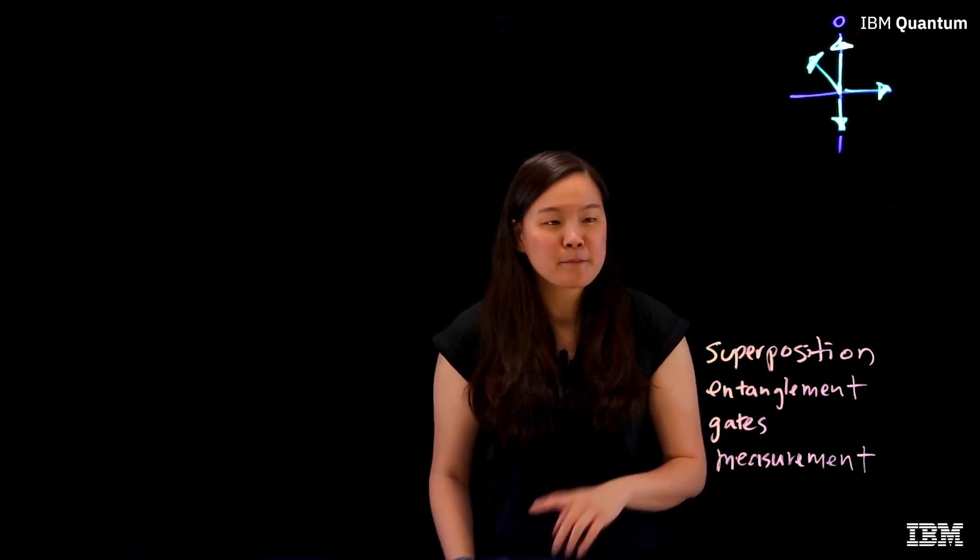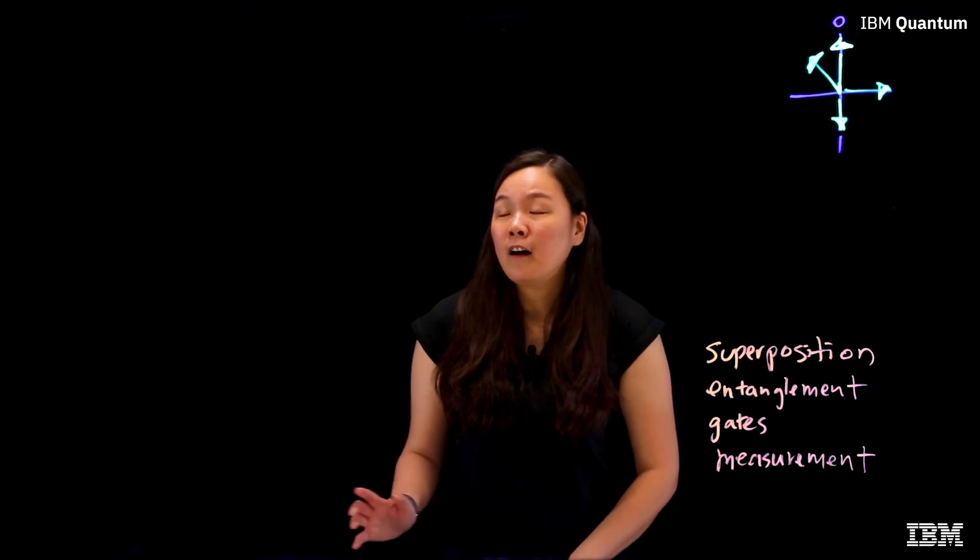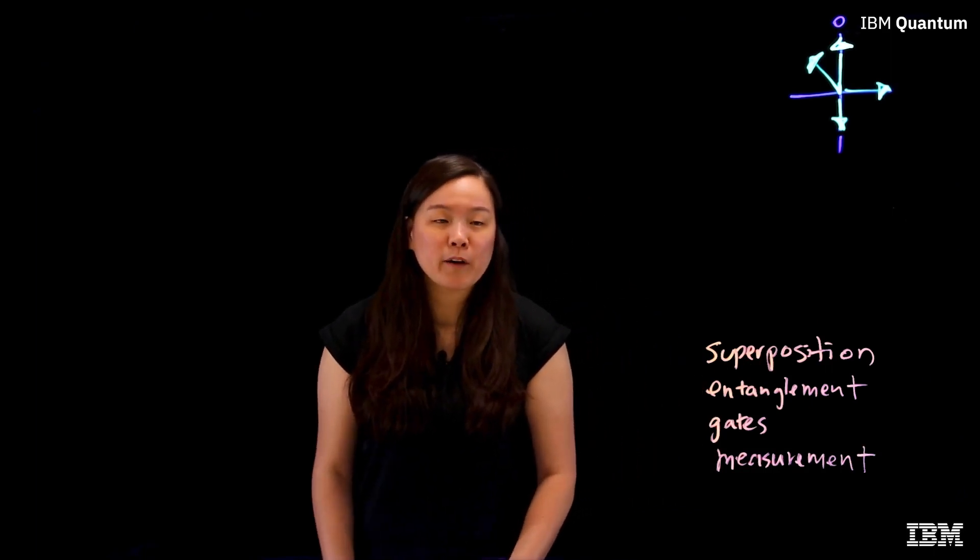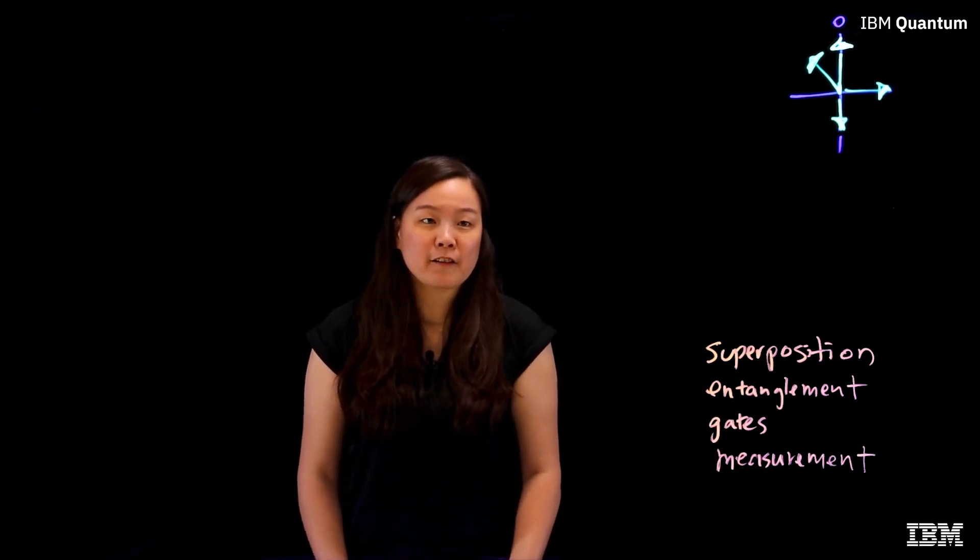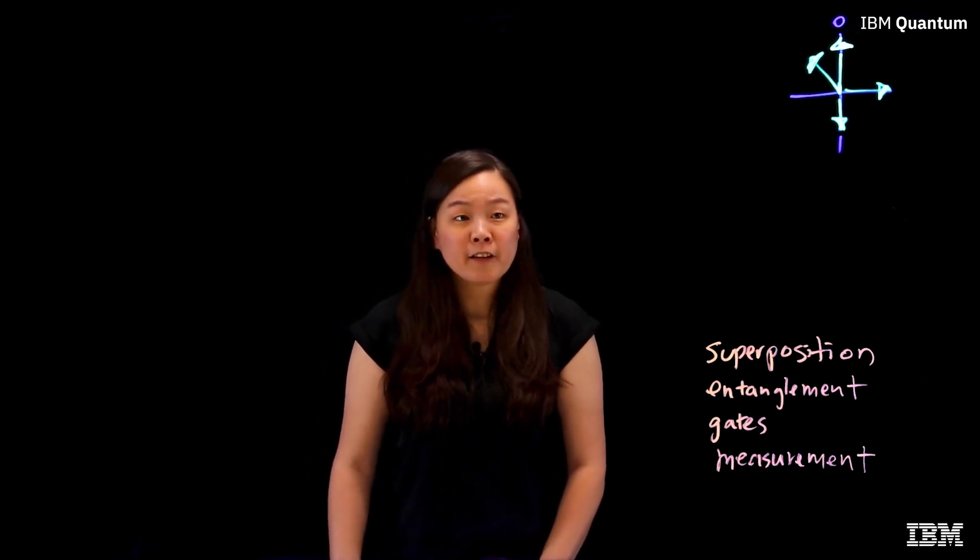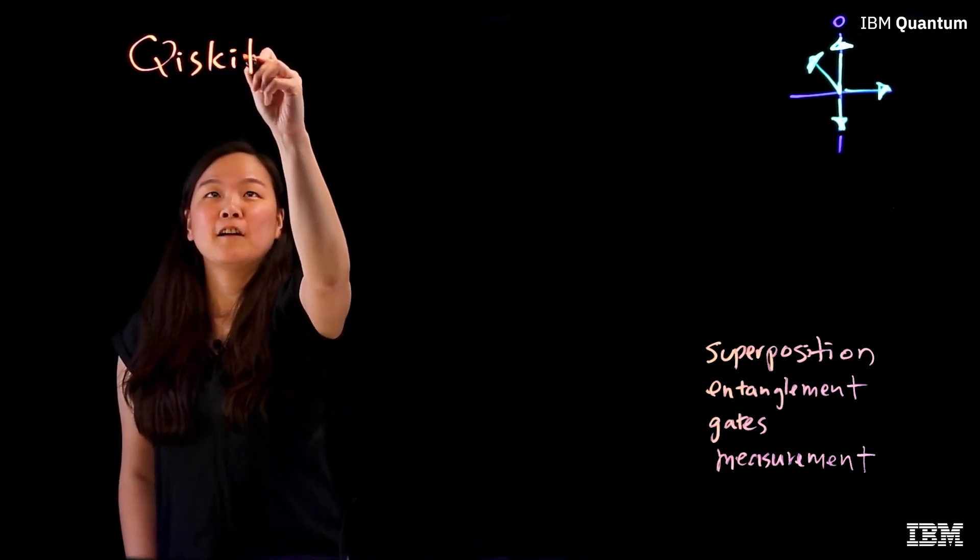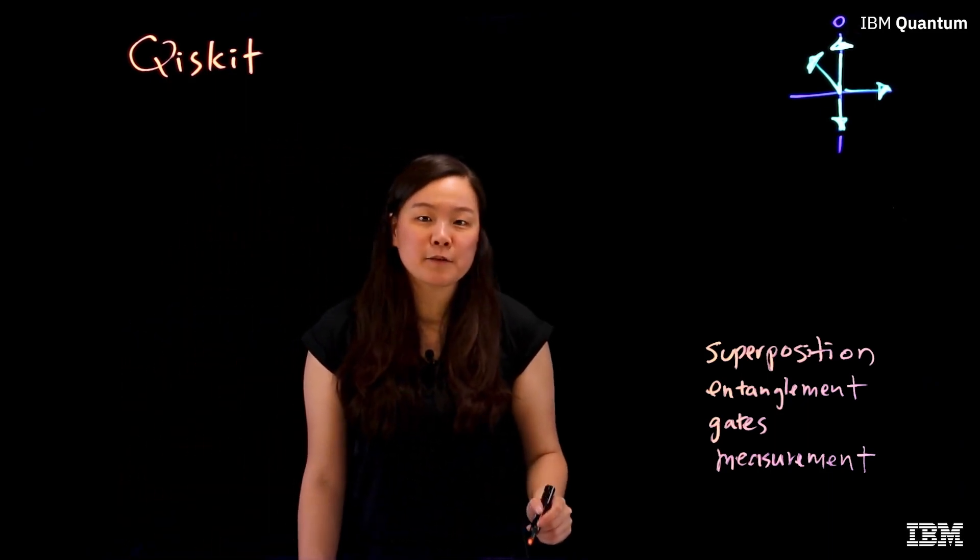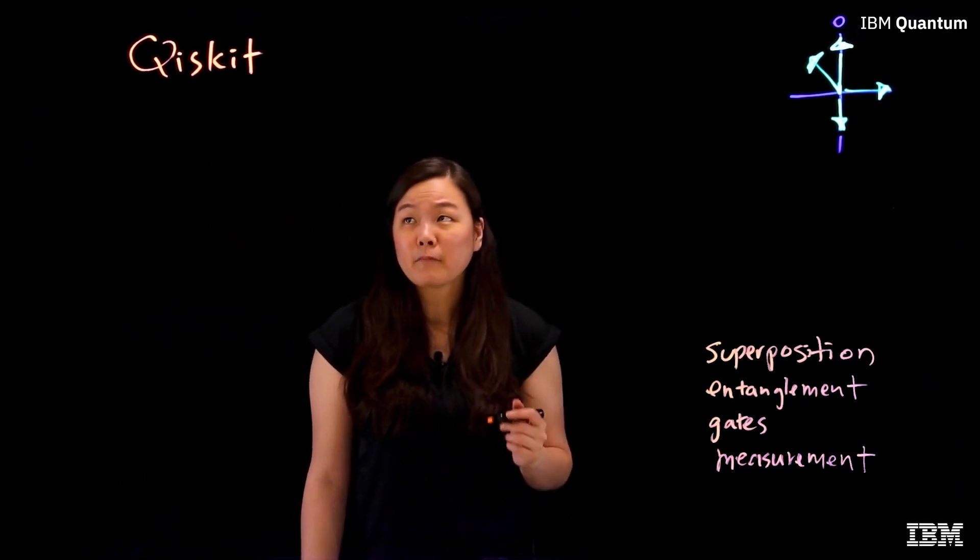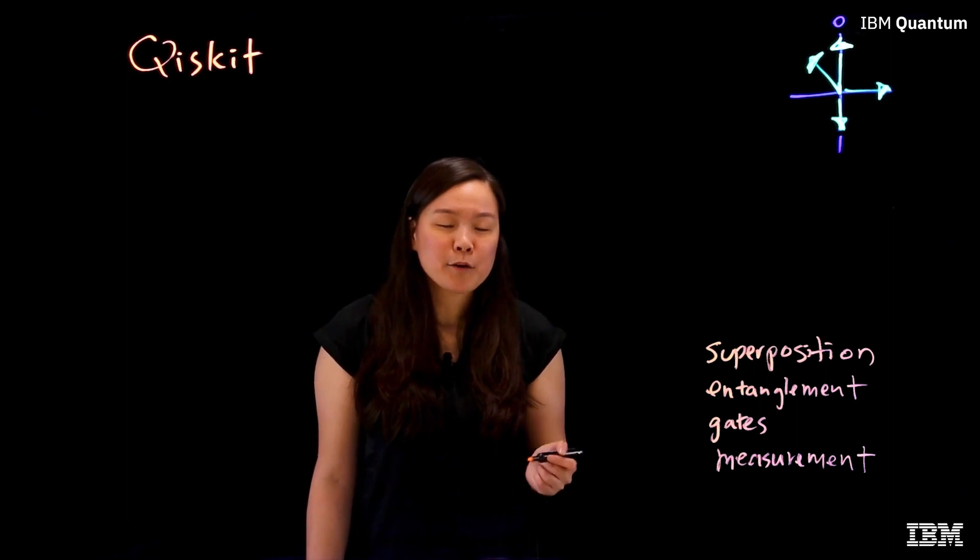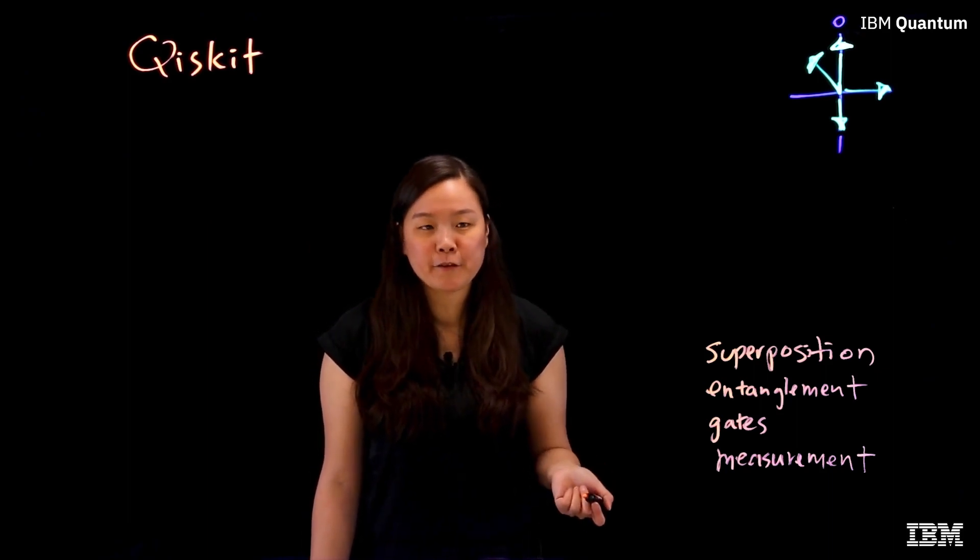So how do we take all these concepts into code? And the answer is simple. We use a quantum software development kit. In this video, we will be using Qiskit, which is the most widely used quantum SDK today. Qiskit is based on Python, which is fairly simple to learn even if you never used it before.